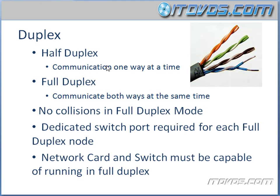Full duplex is actually twice as fast as half duplex. So if we've got a 100 megabits per second network running at half duplex, when we run it at full duplex, in theory we can get 200 megabits per second — but that's only a theoretical speed. Just know that we get twice the throughput with full duplex because we can talk both ways at the same time. And because we have dedicated lines for communication going out and coming in, there aren't any collisions in full duplex mode.